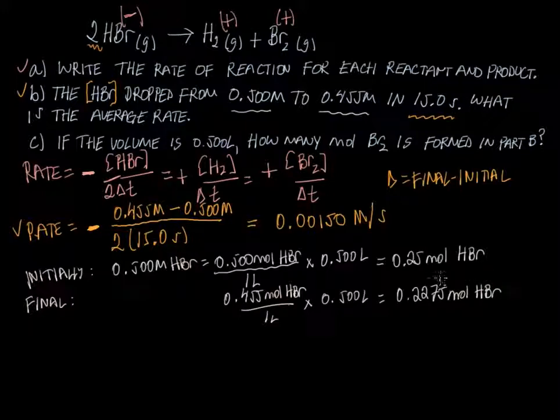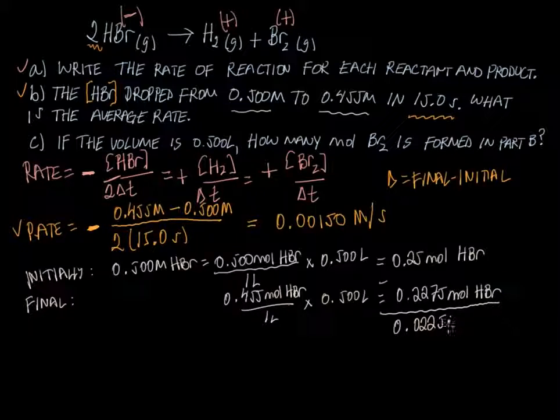So if I started with this amount and I ended up with this amount, I can just subtract these two to find out how many moles of HBr have reacted. And I get a quantity of 0.0225 moles of HBr that react.